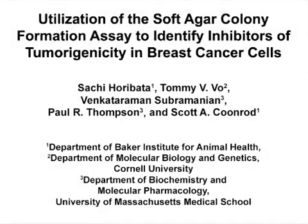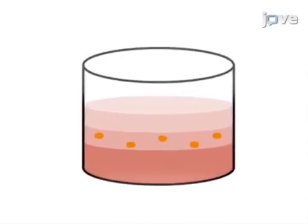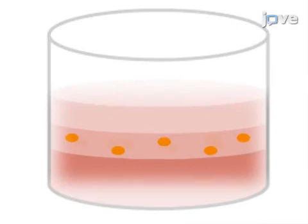The overall goal of this procedure is to quantitatively determine the effect of treatment on the ability of cells to proliferate in semi-solid matrices, as enhanced ability is a hallmark of cell tumorigenicity. Using the soft agar assay, tumorigenicity is measured through a cell's ability to form colonies within a semi-solid agarose gel, since non-transformed cells are unable to rapidly propagate in this environment.